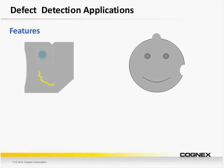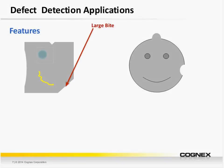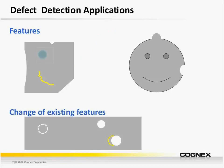Advanced defect detection is really a subset of these inspection applications. More specifically, we can use specific tools to inspect for features that are not expected or desirable — features such as mouse bites along the edge of a part, unwanted discoloration or a blotch on the surface, a dent along the edge or surface, scratches, large dents, bites, or bumps. We can also inspect for defects that involve changes to existing features: things out of tolerance specs, incorrect size of a feature such as a stamped hole, incorrect placement or movement of a feature, or a missing feature altogether.